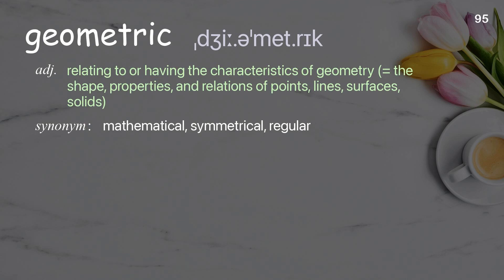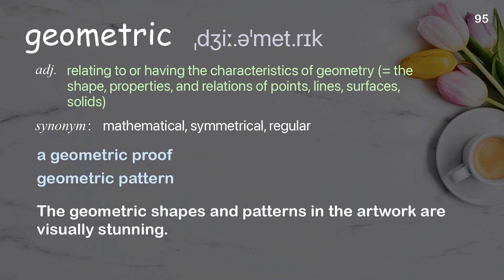Geometric: relating to or having the characteristics of geometry — the shape, properties, and relations of points, lines, surfaces, and solids. Examples: a geometric proof, geometric pattern. The geometric shapes and patterns in the artwork are visually stunning.